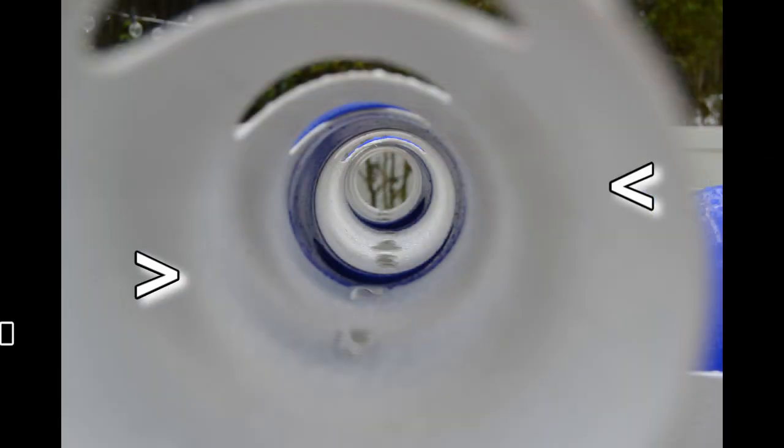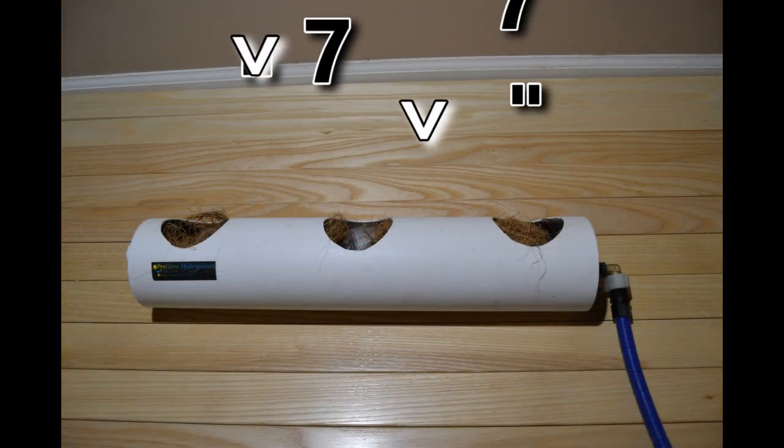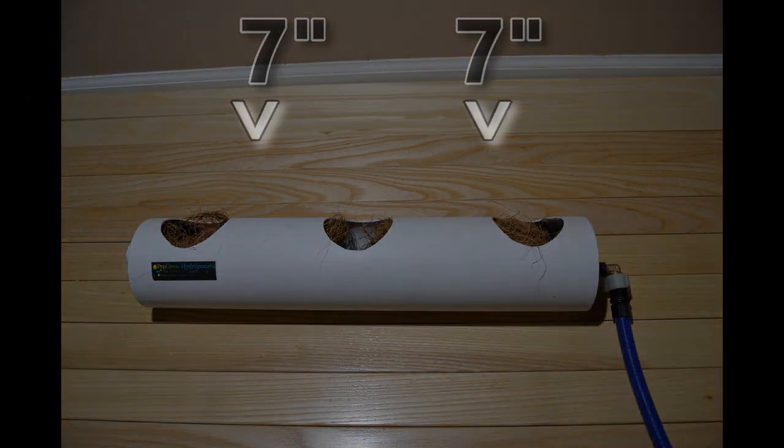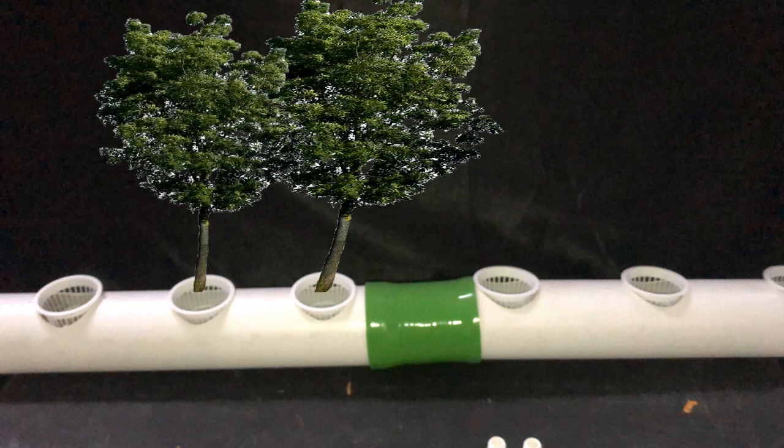Now on to our grow tube. Our standard grow tube is four inches, which gives you about 30% more room than three inch PVC with three holes, seven inches apart. Oddly, people seem to think you have to use all the holes and fill them with plants. You do not.